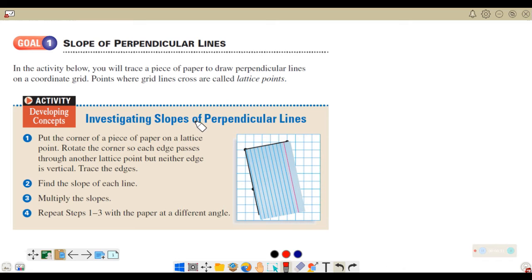The activity is called investigating slopes of perpendicular lines. Before we start, let's define lattice points. In the activity, you will have to have a graphing paper and a piece of paper with straight edges and 90-degree corners. Lattice points are the points of intersection of the grid lines. These are the lattice points, the red ones.